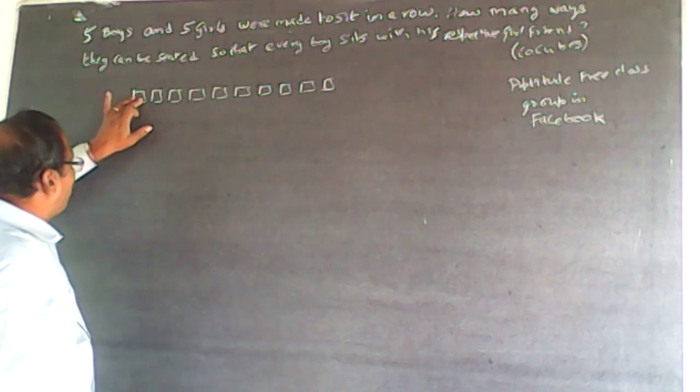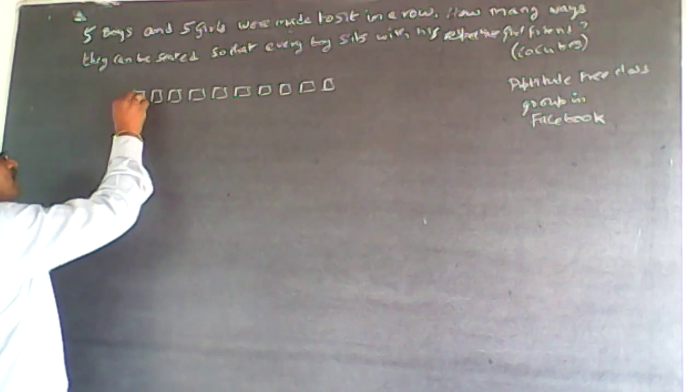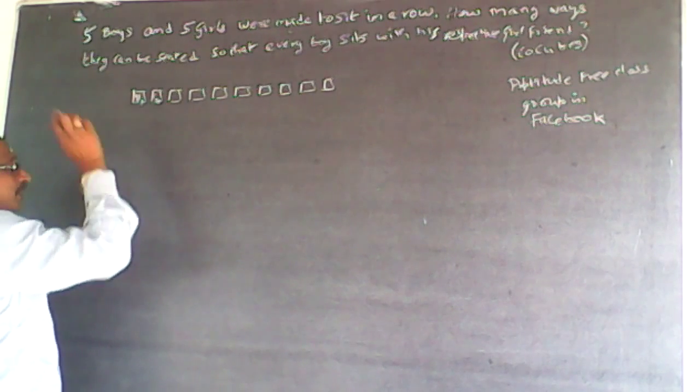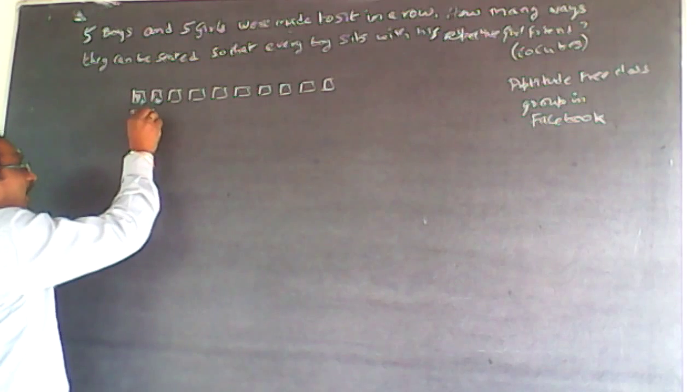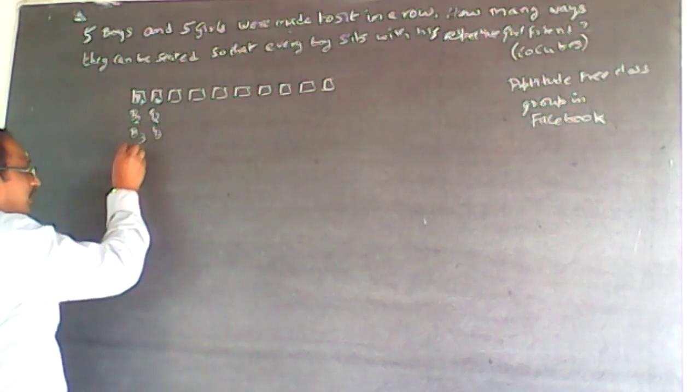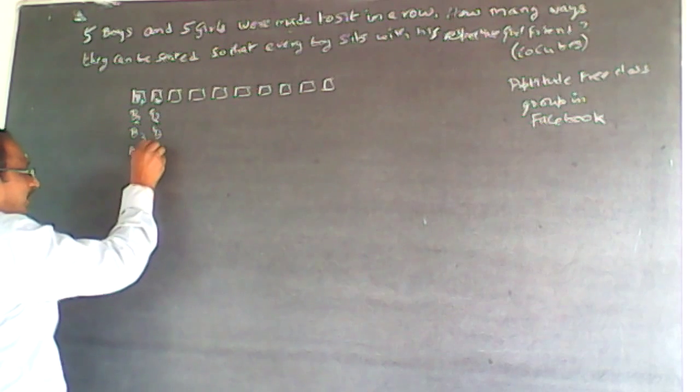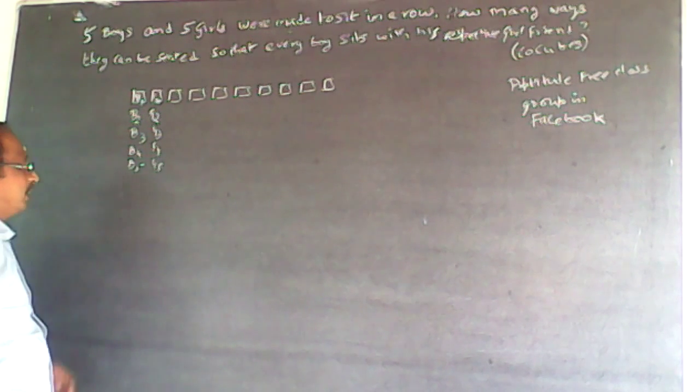Now what happens is, if I start with a boy here, I will make it as B1 here, so automatically G1 has to be here. Supposing B2 is here, G2 has to be here. B3 is here, G3 has to be here. B4 is here, G4 has to be here. And B5 is here, G5 has to be here.